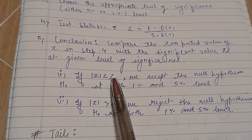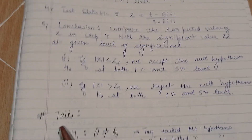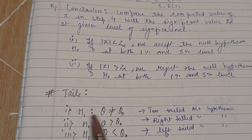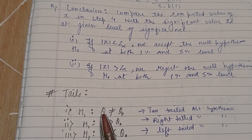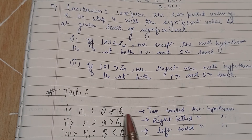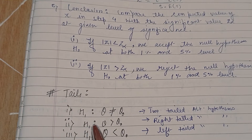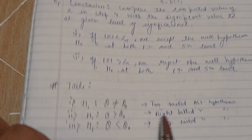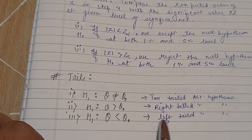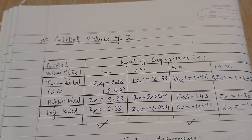Now let us understand what tails are. In hypothesis H1, if two quantities theta and theta-naught — which can be any quantities like mean, proportion, etc. — are involved: if theta is not equal to theta-naught, it is a two-tailed test; if theta is greater than theta-naught, it is a right-tailed test; and if theta is less than theta-naught, it is a left-tailed test.